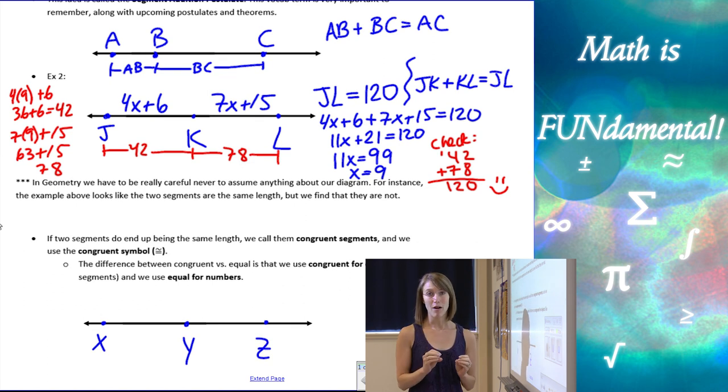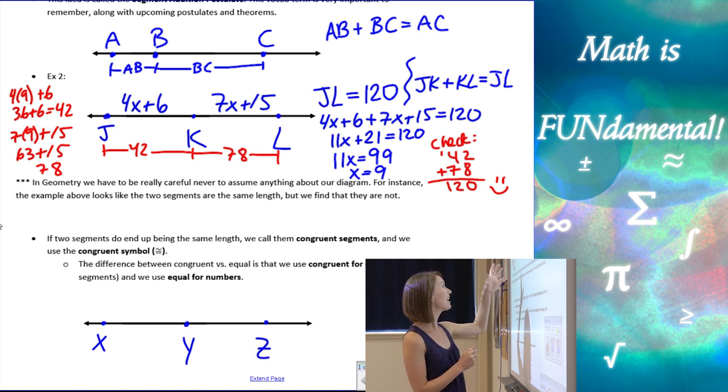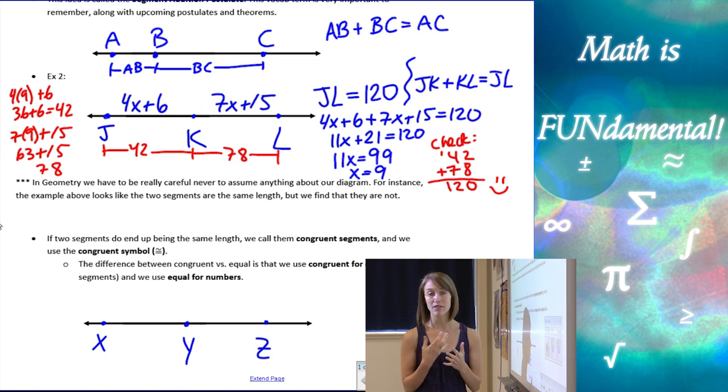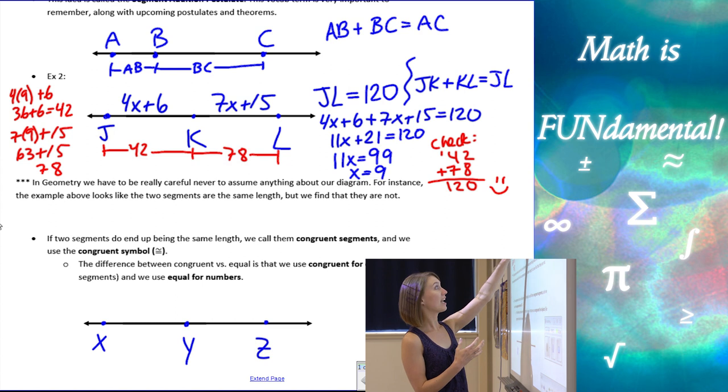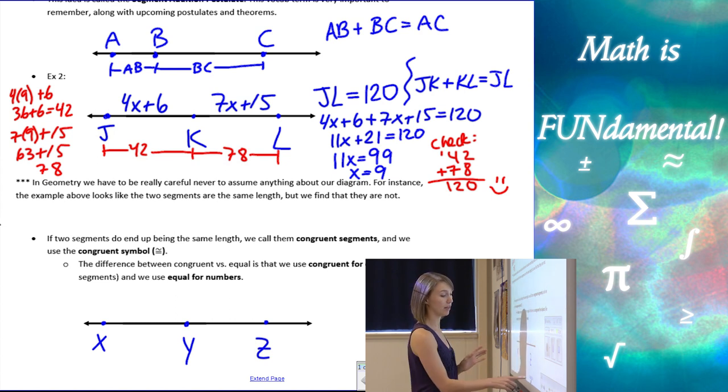Now, what I want to point out now is that in geometry, we have to be really careful never to assume anything. So if we look at that last example before we started working with our segment addition postulate, it kind of looks like K is in the middle of J and L. But if we set these two things equal to each other, we wouldn't have gotten the correct answer because we're not given any information about them being the same length. So we can only use what we know is true, and that's that JK and KL, if I put them together, they make JL, which I was given was 120. So don't assume that things are equal even if they look like they are.